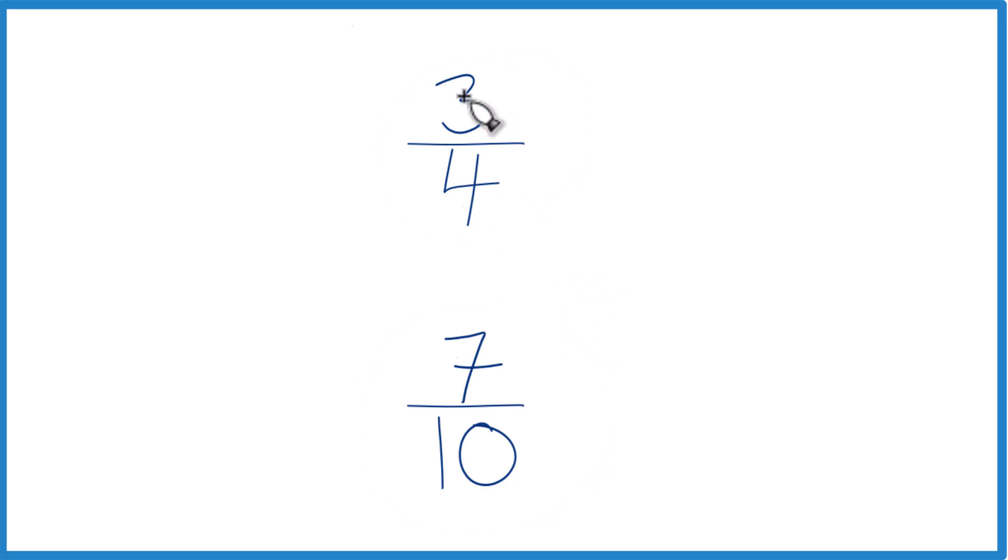First off, you can divide 3 by 4 on a calculator, 7 by 10, get the decimals and compare them. That'll tell you if 3 fourths is greater than, less than, or equal to 7 tenths.